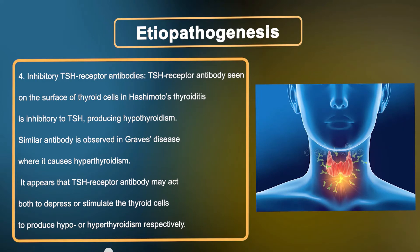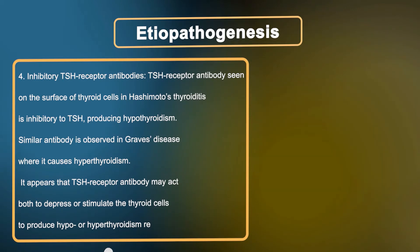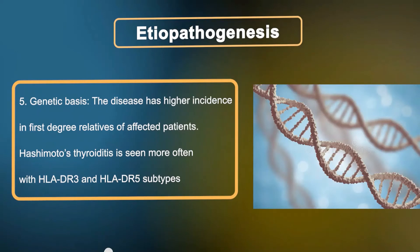Fourth, inhibitory TSH receptor antibodies: TSH receptor antibodies seen on the surface of hypothyroid cells in Hashimoto's thyroiditis are inhibitory to TSH, producing hypothyroidism. A similar antibody is observed in Graves disease where it causes hyperthyroidism. TSH receptor antibodies may act both to depress or stimulate thyroid cells. Fifth, genetic basis: the disease has higher incidence in first-degree relatives of affected patients and is seen more often with HLA-DR3 and HLA-DR5 subtypes.